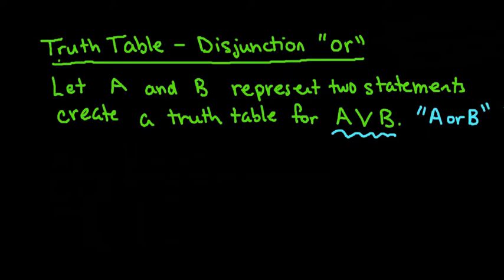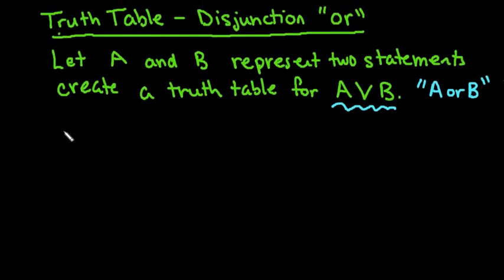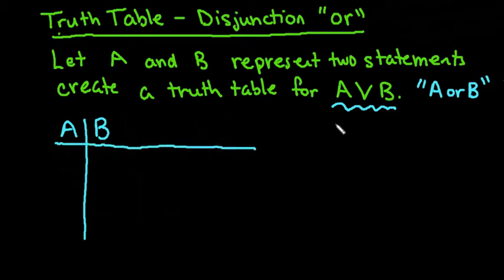So when you start your truth table and you have two statements, what you're always going to do is start with the two variables that you are given. So in this case, we are given A, B. You could be given variables like P, Q, R, S. It doesn't really matter what you are given.